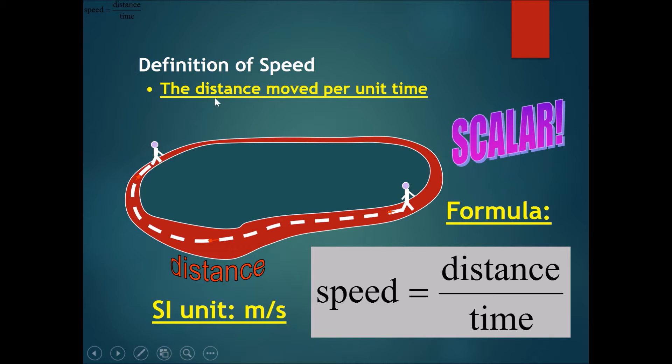The definition of speed: speed is the distance moved per unit time, which simply means speed equals distance divided by time. The SI unit for speed would be meters per second.